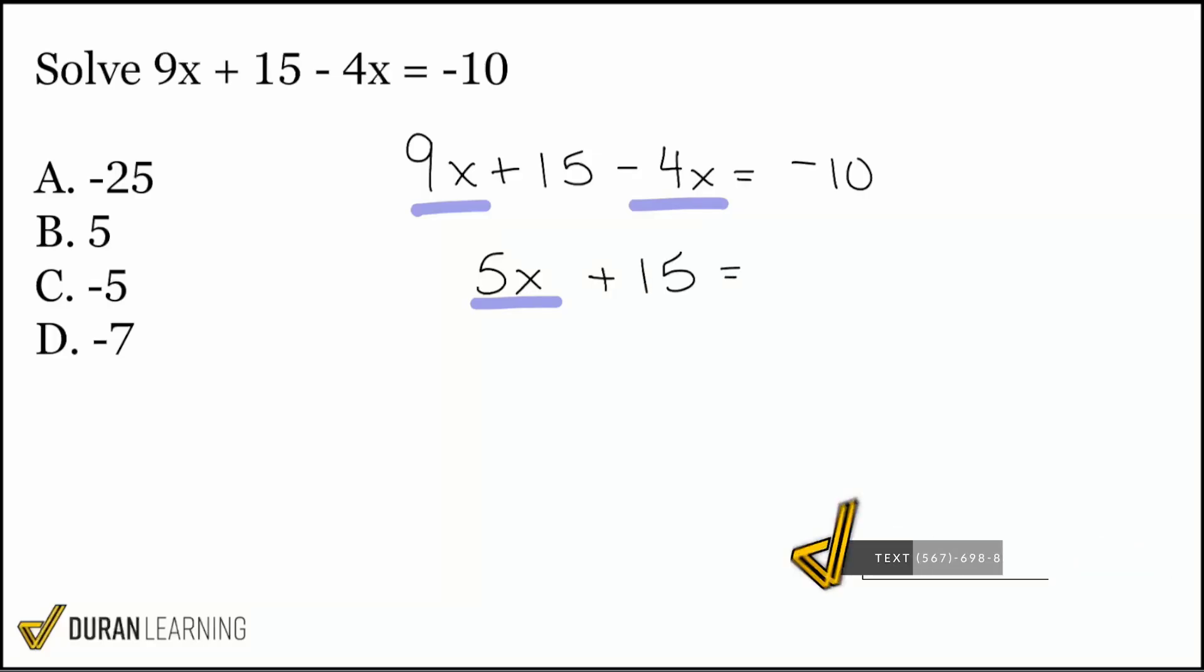From here we have 5x plus 15 equals negative 10. My next step is I got to get the x by itself. I have 5 being multiplied and 15 being added, so I'll take care of that 15 by subtracting 15 on both sides.